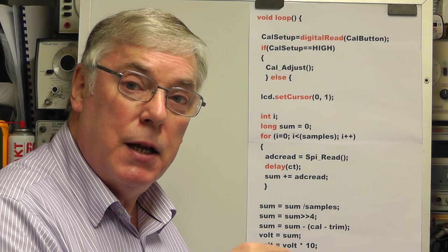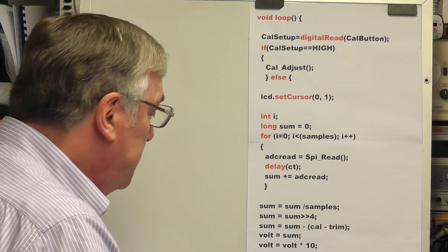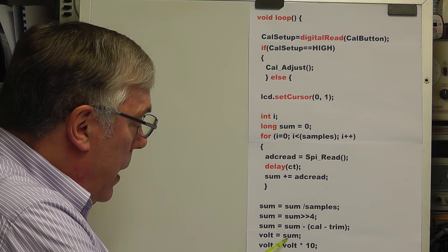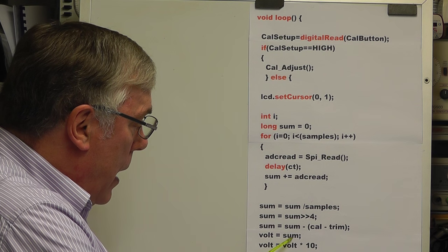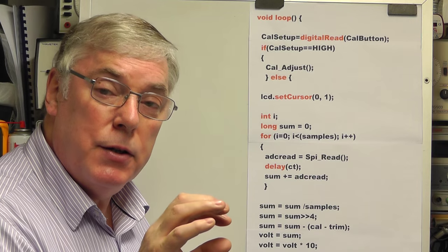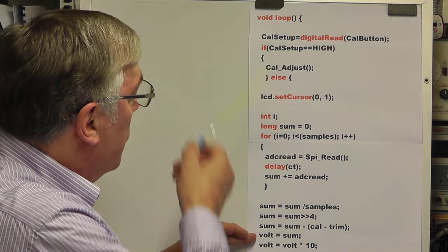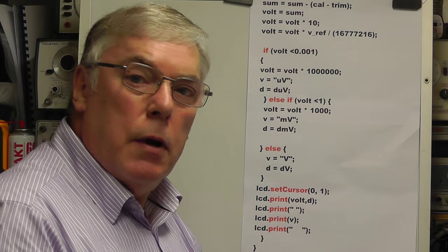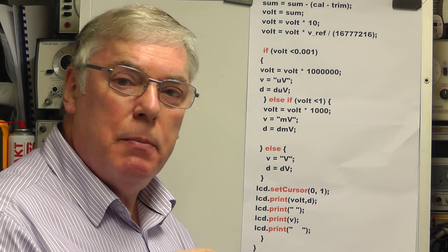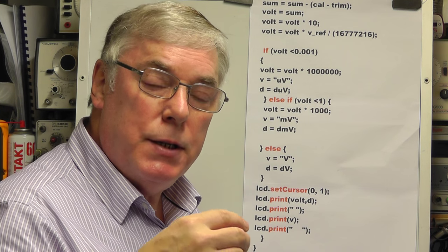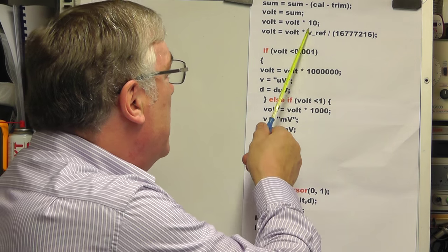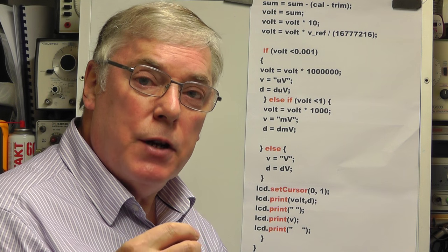I left the sub least significant bits in during averaging as they may improve accuracy, but now they're removed by the four-place right shift, leaving just our 24-bit data stream. I then add any calibration needed, and finally convert the sum to a float called volts for display on the LCD as a decimal reading. On the next line, volts equals volts times 10 — because our hardware had a divide-by-10 resistor network at the input to reduce the input voltage, so we account for that here. If you used a divide-by-100 network you'd multiply by 100 instead, which could be used as a future range upgrade.